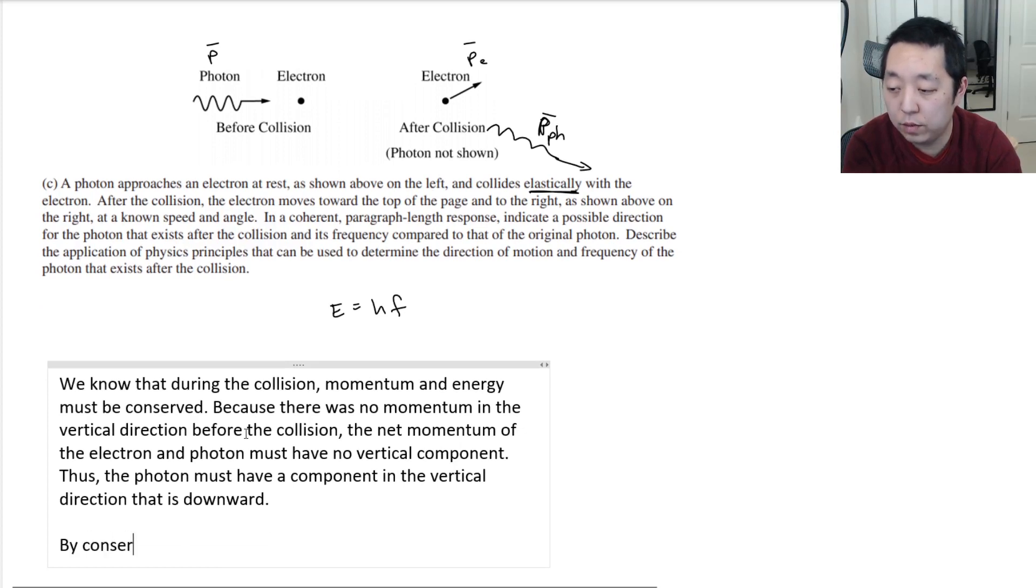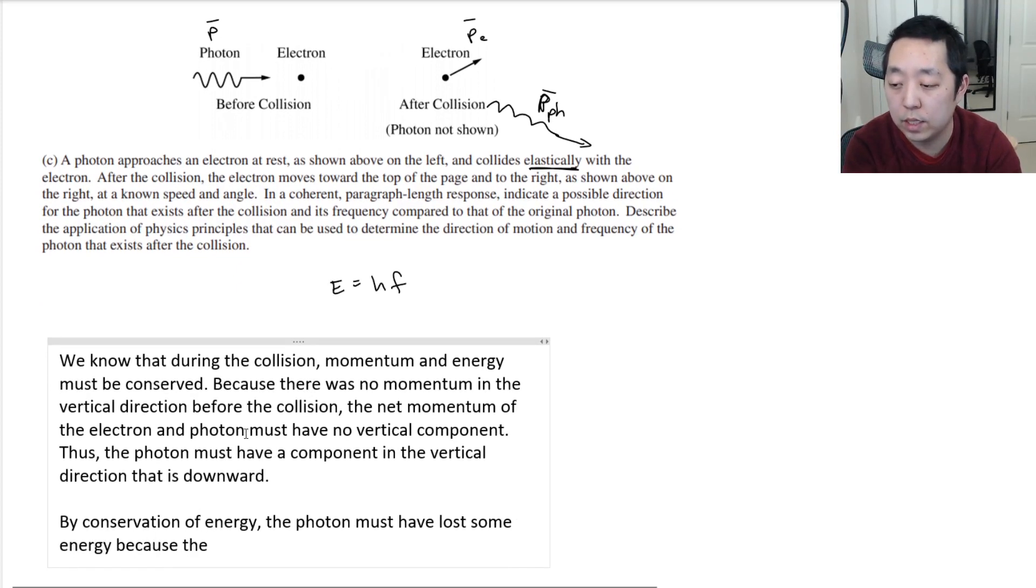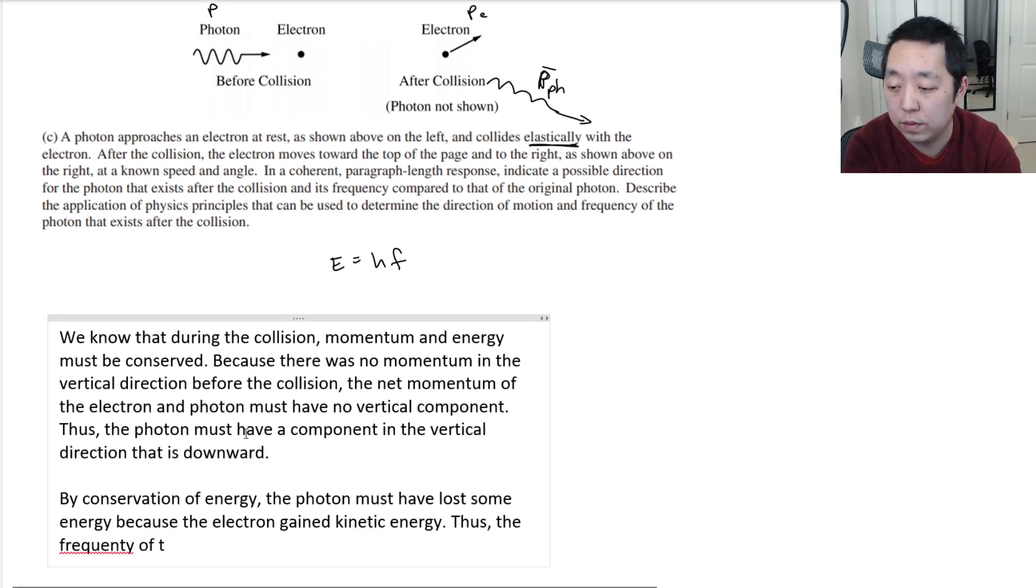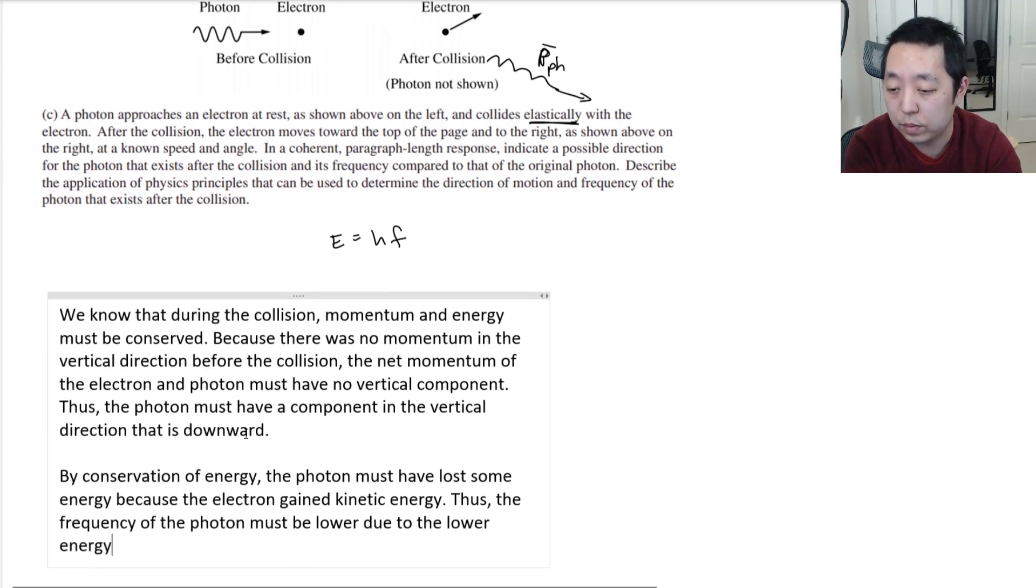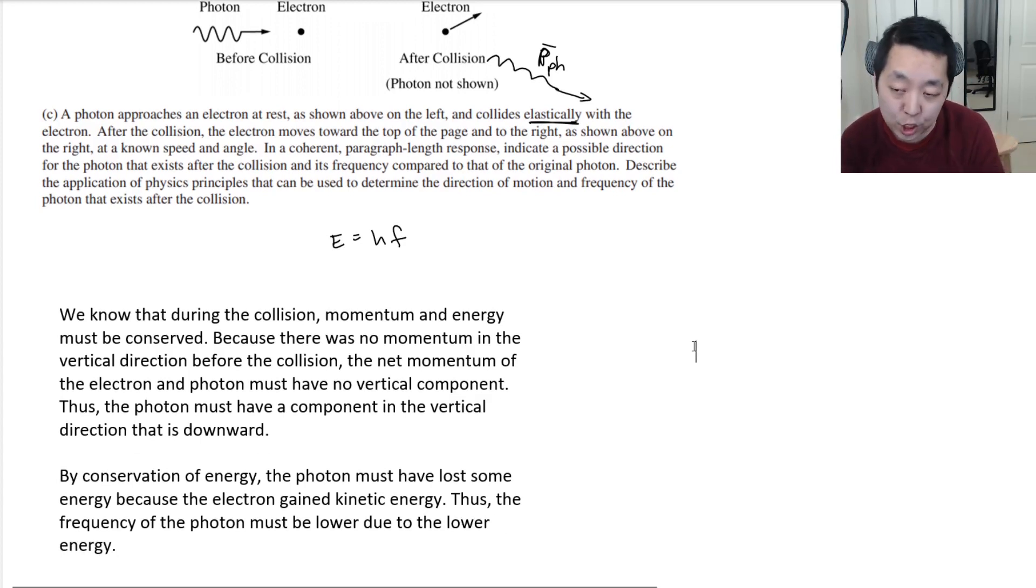By conservation of energy, the photon must have lost some energy because the electron gained kinetic energy. Thus, the frequency of the photon must be lower due to the lower energy. So I guess my conclusion would be that the photon would have less energy. And it would have a vertical component that is downward.